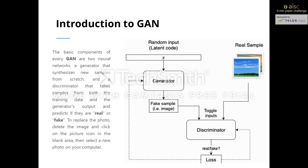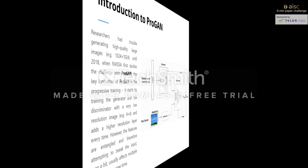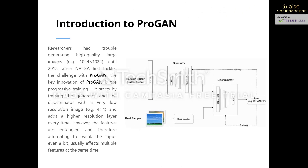Therefore its initial output is noise as well. Over time, the generator receives feedback from the discriminator and learns to synthesize more realistic images. At the same time, the discriminator also improves over time by comparing generated samples with real samples and making it harder for the generator to deceive.